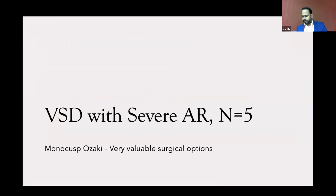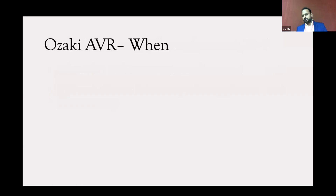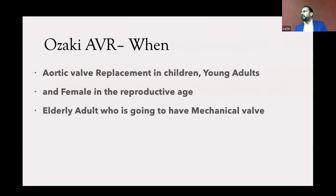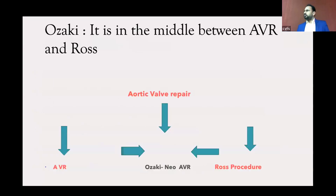Modifications include: monocusp AVR in five patients, all VSD with severe aortic regurgitation — it works. For adult patients needing pulmonary valve replacement we use the same technique. For tetralogy of Fallot with absent pulmonary valve, two patients were two months and three months of age — without access to homograft and with patients unable to afford a contegra graft, this is a very cheap alternative and it works beautifully. Our choice is monocusp Wasaki for pulmonary valve replacement in adult patients or tetralogy with absent pulmonary valve.